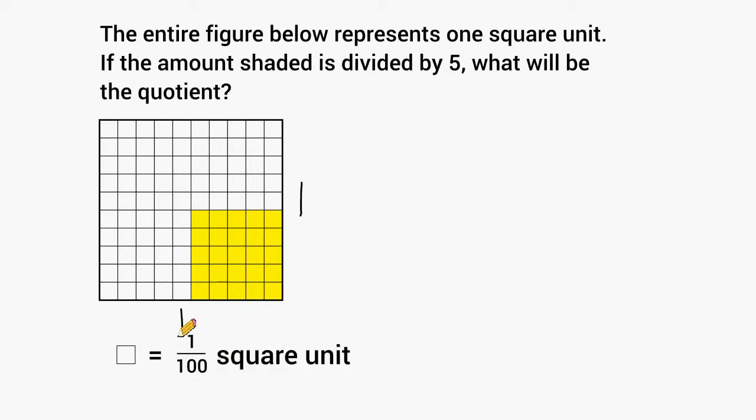So what we have to do is take the value of one of these square units, which is 1 one hundredth, and multiply that by 25, which would be 25 hundredths of a square unit. So the amount shaded in is equivalent to 0.25 or 25 hundredths.